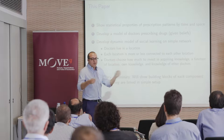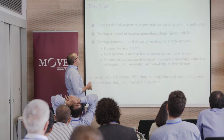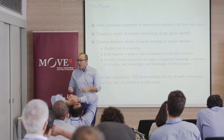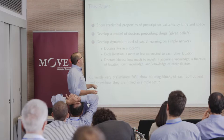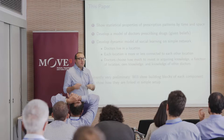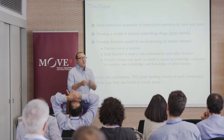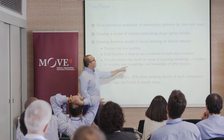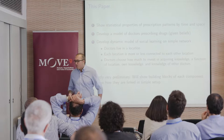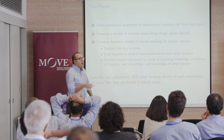The paper has three parts. First, I'll show statistical properties of prescription patterns across time and space—linear and log-linear regressions showing who starts using drugs and how that's a function of space and changes over time. Second, I'll develop a simple model of doctors choosing which drugs to prescribe given their beliefs about drug quality. Third, I'll write down a dynamic model of social learning on a simple network, where the network allows me to speak about geography.